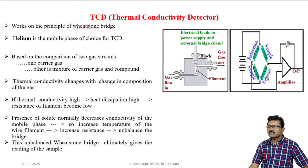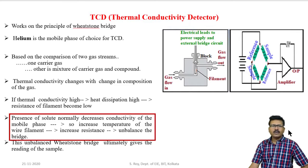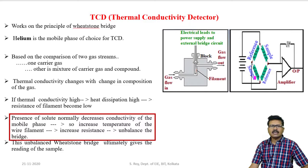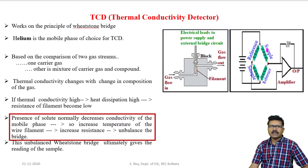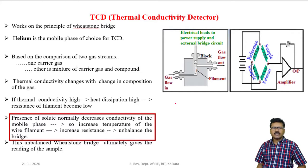The reference gas is allowed to pass through two opposite arms of the Wheatstone bridge, and through the other two opposite arms, carrier gas with sample is allowed to pass. When no sample gas is present, the bridge will be balanced because all four arms are exposed only to carrier gas. When sample gas is present with the carrier gas and passes through those opposite arms, conductivity is reduced — presence of solute normally decreases conductivity of the mobile phase. When surrounding conductivity decreases, heat dissipation decreases and temperature of the resistance increases.